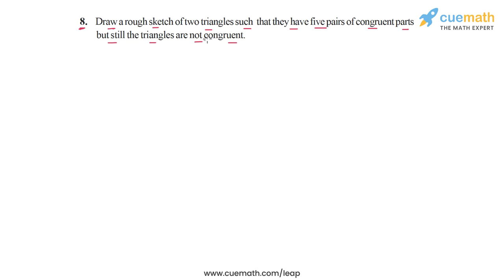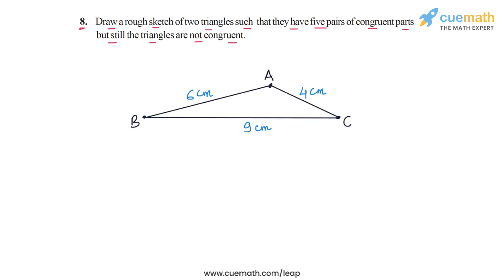I want you to think about this triangle ABC that I have drawn, whose smallest side AC is equal to 4 cm, then side AB is equal to 6 cm, and its largest side BC is equal to 9 cm.